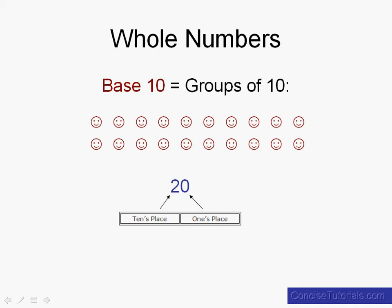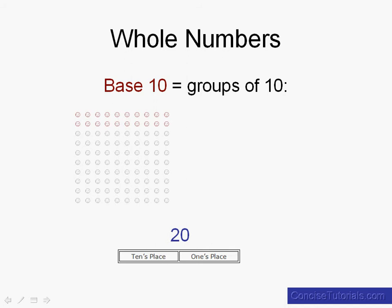Let's shrink these down and add more rows of happy faces. You can see the two rows we've already counted — our two groups of 10. If we count through all the other happy faces all the way up to the end but not counting the last one, we would find that we had 99 happy faces. The nine in the tens place represents nine groups or nine rows of 10, and the nine in the ones place means we've counted an additional nine happy faces.